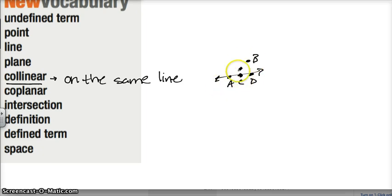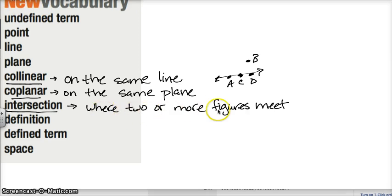A, C, B are not collinear. Those three points are not collinear. Similarly, the word coplanar means on the same plane. So any points that are on the same plane would be coplanar. And the word intersection. Intersection means the place where two or more shapes or figures intersect or join. Where two or more figures meet.